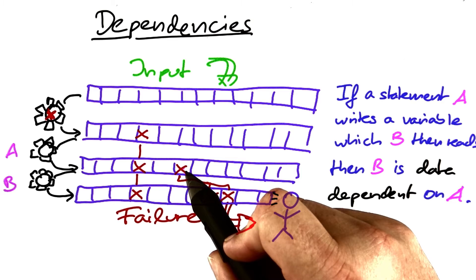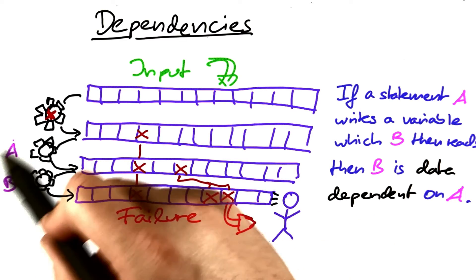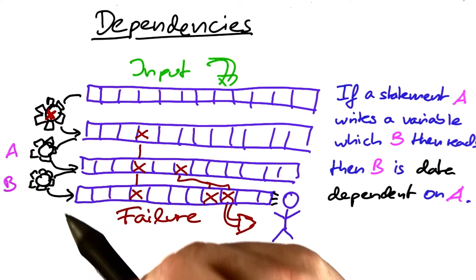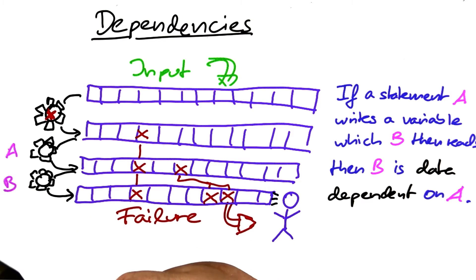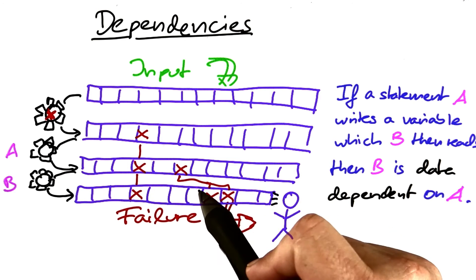In our example up here, A may have written this variable and this will then be read by B. Then we say that these two statements are data dependent on each other. B is data dependent on A because there's a flow of data from the statement A to the statement B.